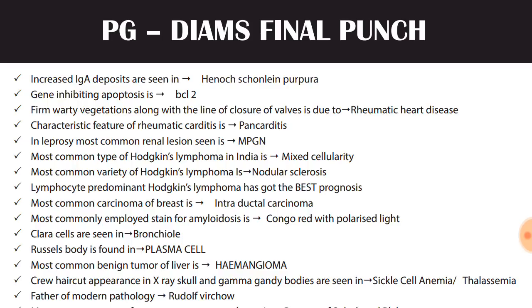Crew-cut haircut appearance on X-ray skull and Gamma-Gandy bodies are seen in sickle cell anemia and thalassemia. So Gamma-Gandy bodies and crew-cut appearance of X-ray skull are seen in both thalassemia and sickle cell anemia.